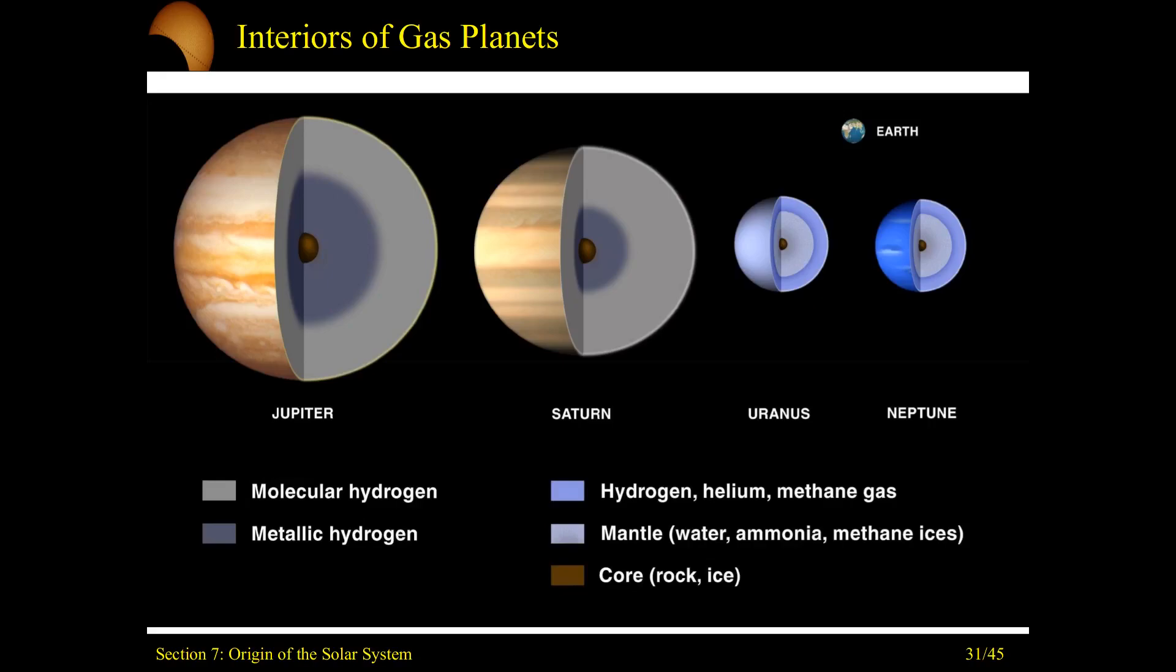Just outside of that, you'll have what we call molecular hydrogen, basically H2. These are forming chemical bonds holding hydrogens together. And outside of that, that'll be your upper layer atmospheres - once again, mostly hydrogen.